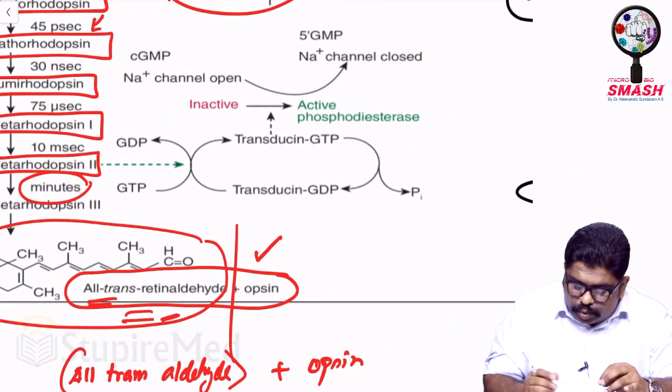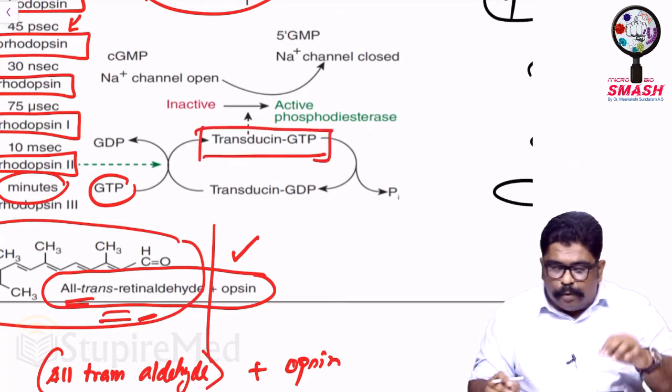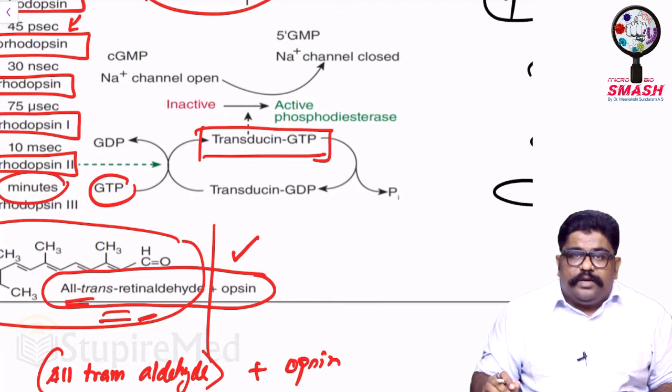Now this metarhodopsin II will help in the conversion of GTP to GDP. At the same time, transducin-GDP becomes transducin-GTP. Now this is where most of the students will have difficulty in understanding what the vitamin A chapter is telling you.